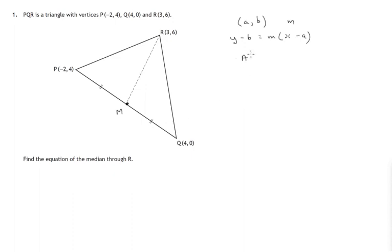Remember, if we know two points, x1 and y1, x2, y2, then the gradient can be found. The gradient of the line joining a to b is the y difference, y2 minus y1 over x2 minus x1. That's the gradient formula.